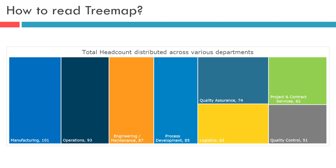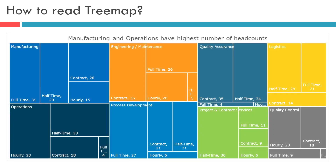Further, we can break the individual rectangles for each department based on the headcount for various types of employment within that department. A portion of each department will be allocated on the basis of headcount for each employment type, as shown on screen. You can go on adding more details; however, it will become crowded and might lose its value to the users. So ideally, only up to two levels is this Treemap useful. I hope it is now clear how to read these Treemap visuals.